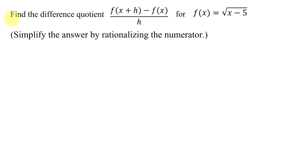In this example, we're asked to find the difference quotient given by f(x+h) minus f(x) all divided by h for the function f(x) equals the square root of the quantity x minus 5. We're also told to simplify the answer by rationalizing the numerator.